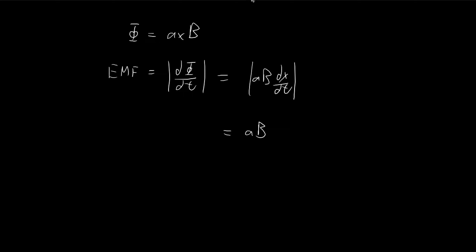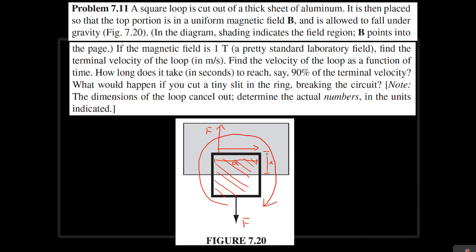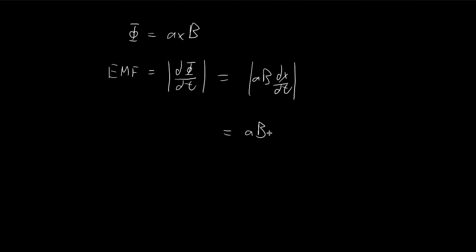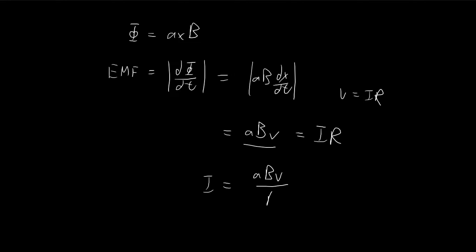Both a and B are constants, and dx/dt is just the change in x. Once it falls down, the change in x should be negative because x is shrinking, but essentially dx/dt equals the velocity going down. Taking the absolute value, we change this to velocity v. So the magnitude of the EMF is a·B·v. Setting this equal to iR using V = iR, the current is equal to a·B·v divided by R.